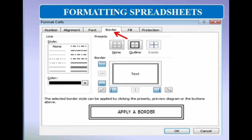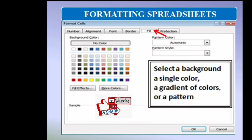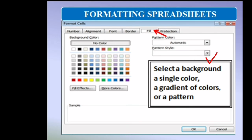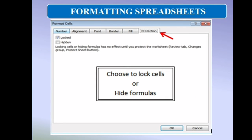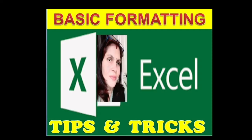Through the Border tab, we can change any border style over the selected cell range. Through the Fill tab, we can change the background color, pattern, and style very easily. The last one is the Protection tab. Through this tab, we can easily lock the cell and hide the formula.